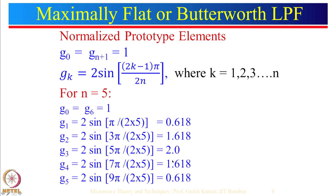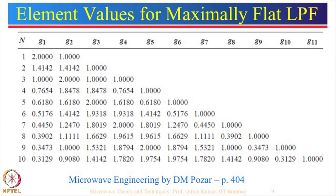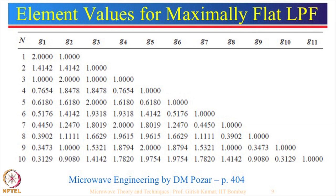Then we looked at the G parameters — how to find out the G parameters for Butterworth. We saw that G0 is equal to G(n+1) equal to 1, corresponding to input and output source as well as load impedances. G parameters can be found by using this simple expression, and we had seen these are the typical values for a fifth order filter. Instead of using this particular expression, one can use the table to find out the different G parameters.